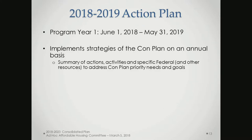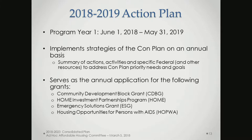The first-year action plan implements the five-year plan annually. Each year for five years we have to come up with an update, specifically talking about how we'll use four funding sources — CDBG, HOME, ESG, and HOPWA — to address goals and priorities.